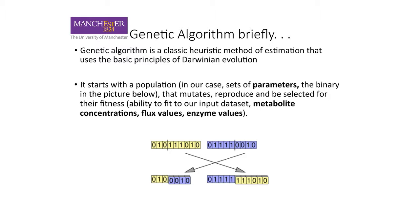The genetic algorithm is a classic heuristic method that uses the basic principles of Darwinian evolution. In my case, you start with a population and set parameters, which then mutate, reproduce, and are selected based on fitness — that is, the ability of the model to fit whatever input data you have. The more input data you have, the more accurate and informative the model. This can include metabolic concentrations, flux values, and enzyme values.